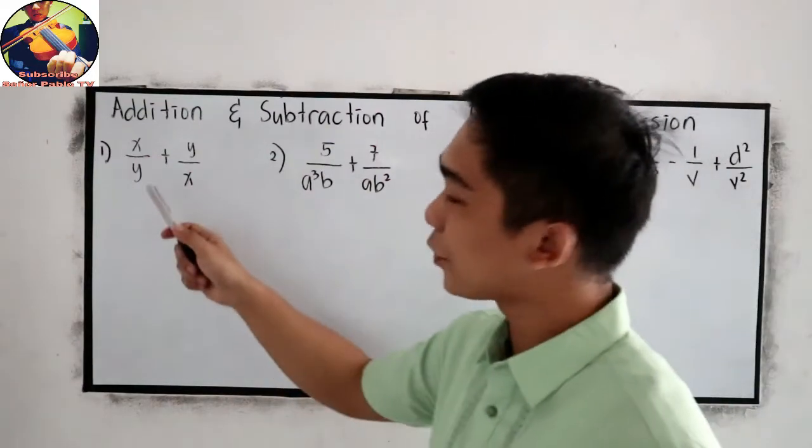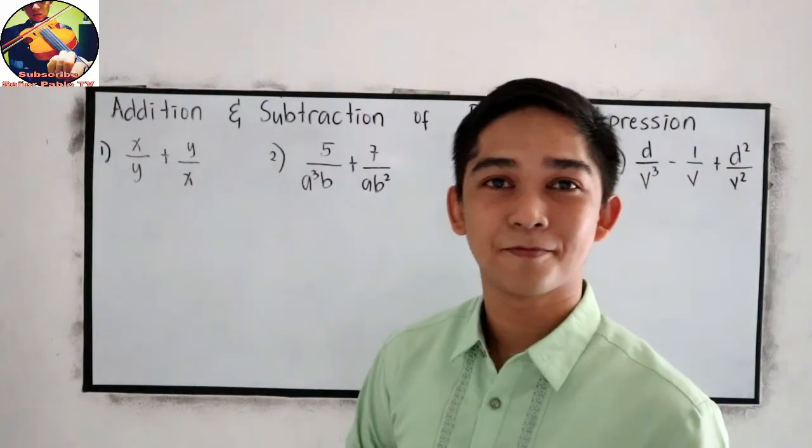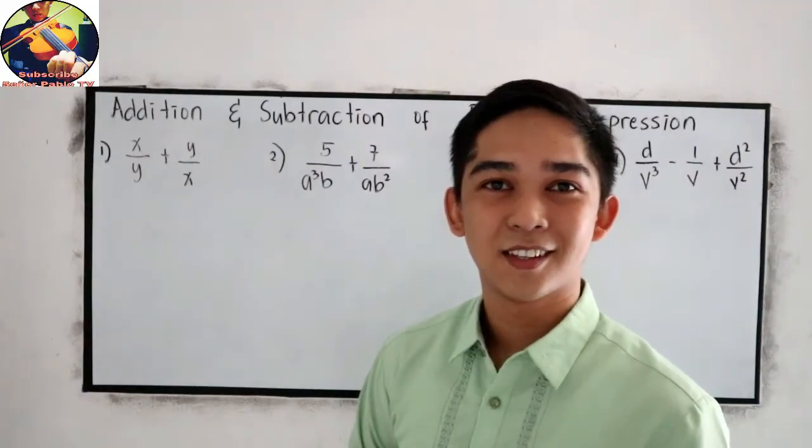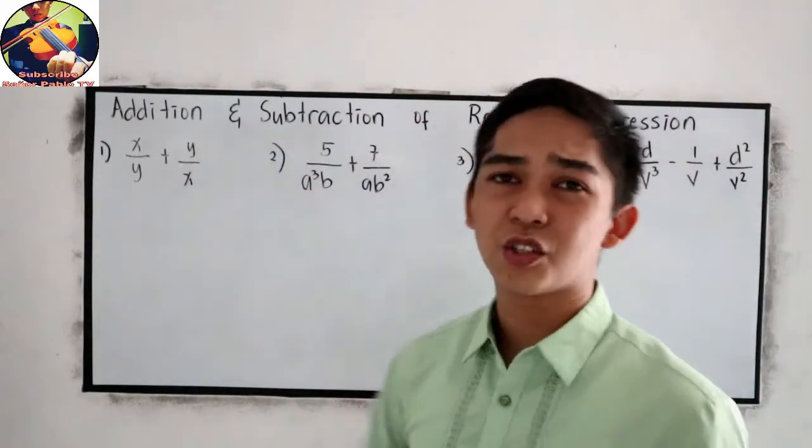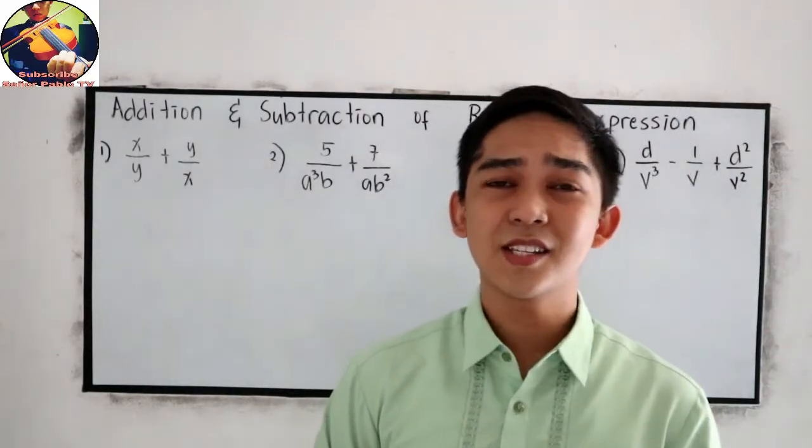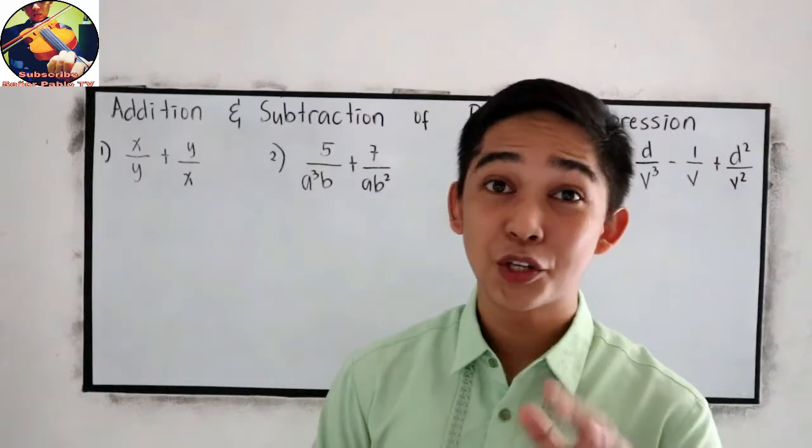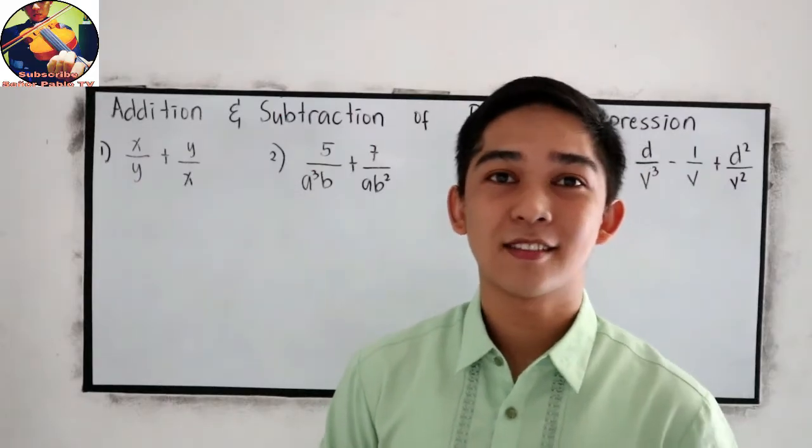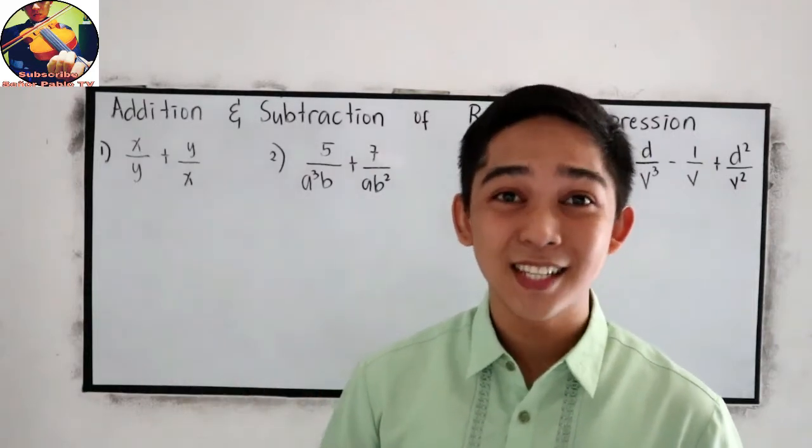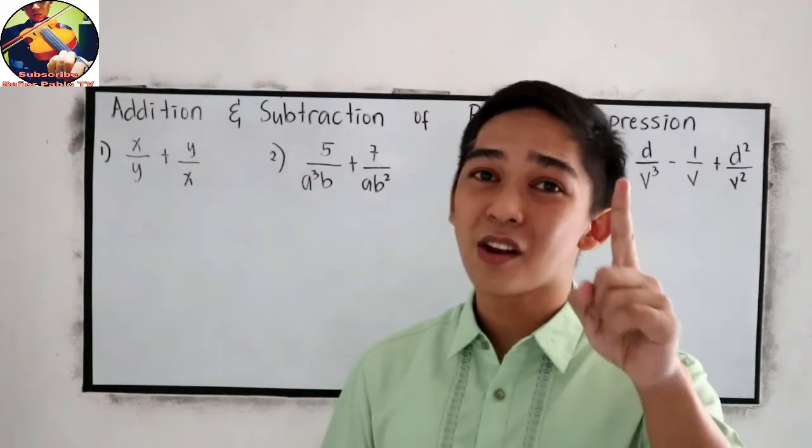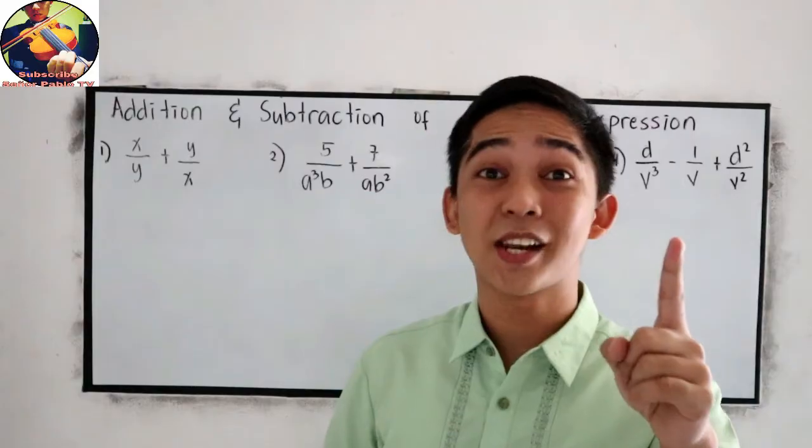Now for number 1, x over y plus y over x, we're going to add the two expressions. Addition and subtraction of rational expressions is just like adding and subtracting fractions in your elementary math. In adding and subtracting fractions, you need to find the LCD. That is also our first step in addition and subtraction of rational expression. Find the LCD.